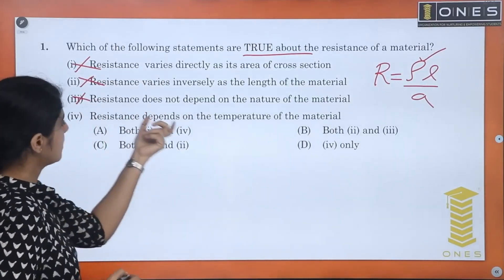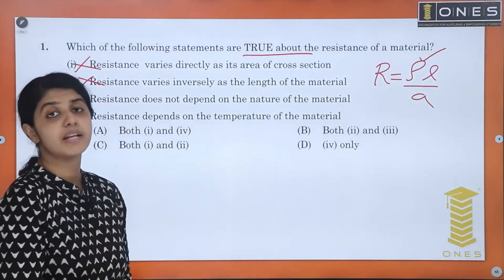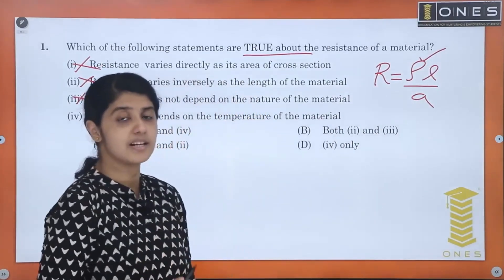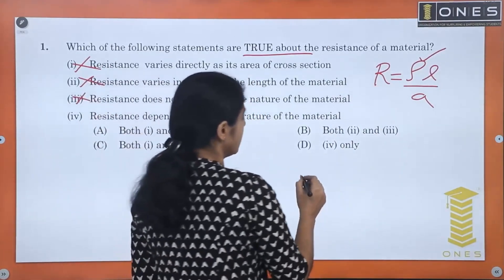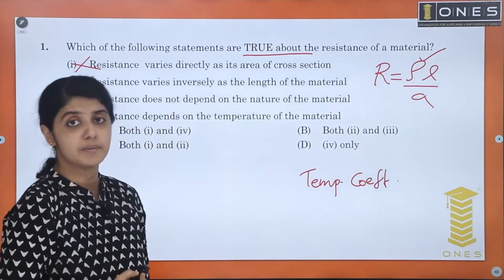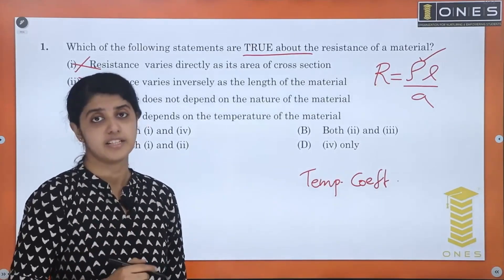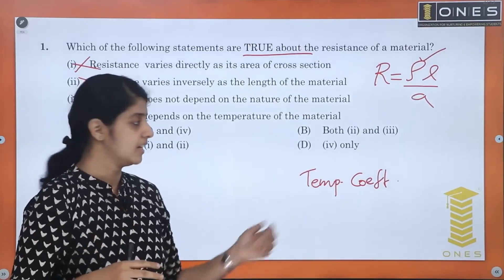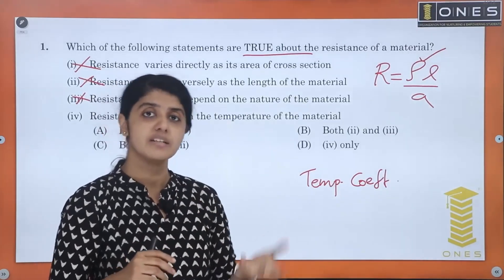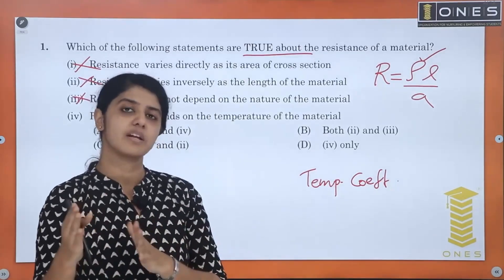The last statement: resistance depends on temperature of material. Yes, resistance is dependent on the temperature of the material. This is described by the temperature coefficient. There are three classifications: positive temperature coefficient, negative temperature coefficient, and negligible (approximately zero) temperature coefficient.